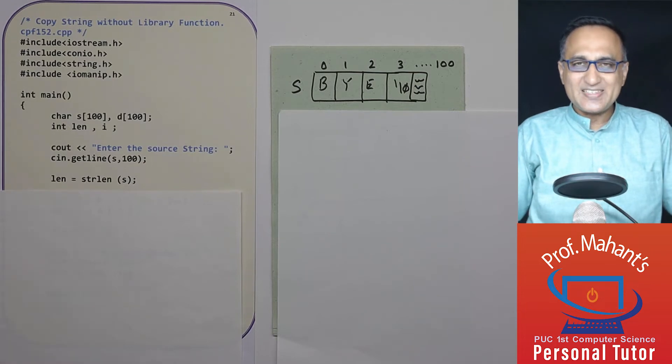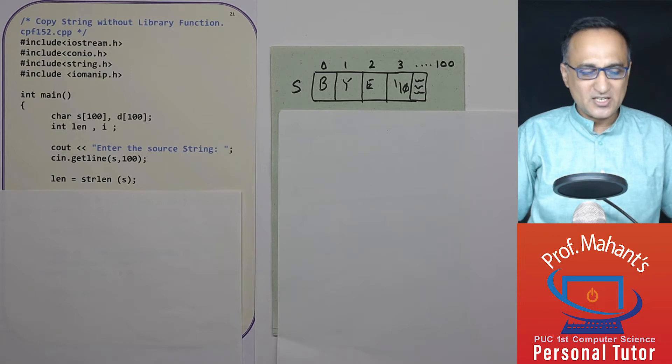Now using a for loop I can simply copy one character at a time from the source to the destination very easily. Let's see how that is done.